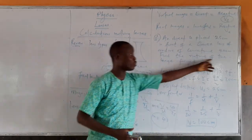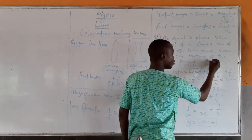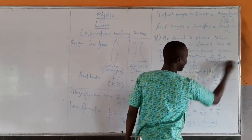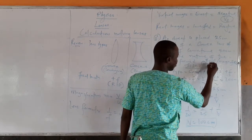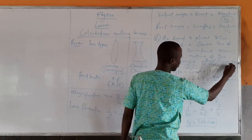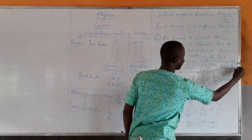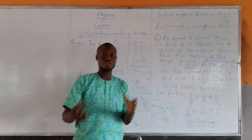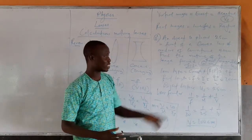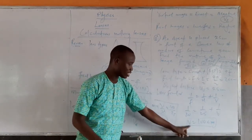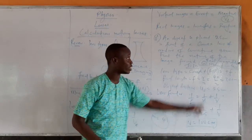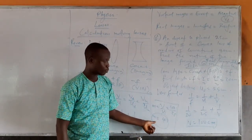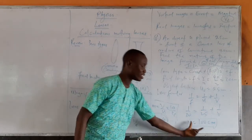When told to describe the nature of the image, the image is real — because of the positive V we obtained — it is magnified with magnification 4, and it is at 100 cm from the lens. The image is real because V is positive, and magnified because the magnification gave us 4. The distance from the lens is 100 cm.